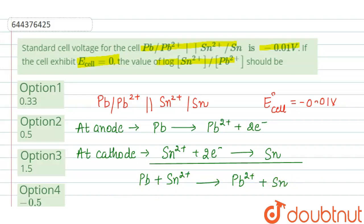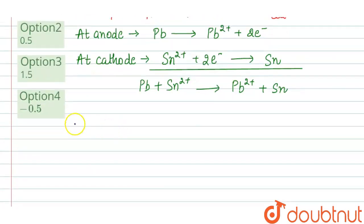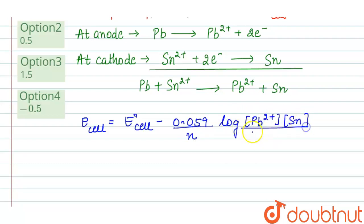For this reaction, if we write the Nernst equation: E cell = E° cell - (0.059/n) log([Pb2+]/[Sn2+]). This equation is at standard temperature, which is 298 Kelvin.